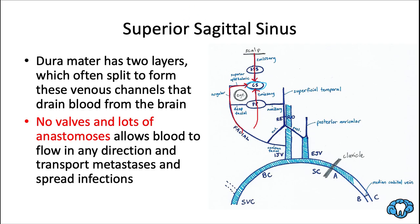The superior sagittal sinus refers to the space between the two layers of the dura mater. The dura mater often splits to form venous channels that drain blood directly from the brain. This has no valves and has a lot of anastomosis — connections that allow blood to flow in any direction. Unfortunately, while that has some benefits, it also means it can transport metastases and spread infections.